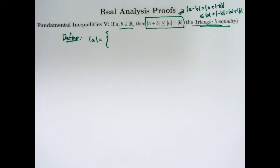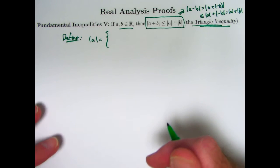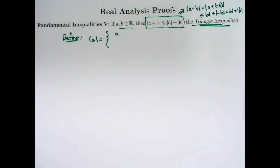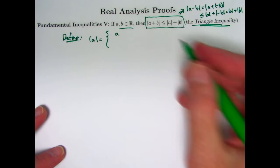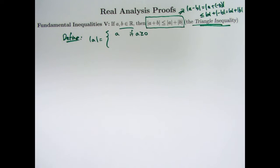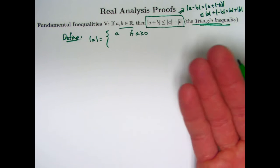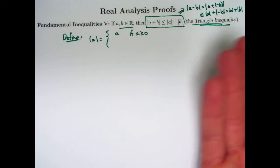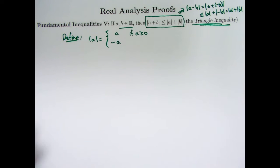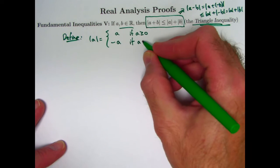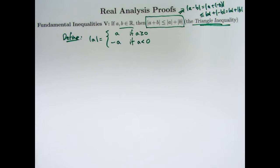You can write it as a piecewise formula. If a happens to be greater than or equal to zero, then the absolute value of a is a itself. The absolute value of five, for example, is five. This is true even if a equals zero — the absolute value of zero is zero. On the other hand, if a is a negative number like negative five, the absolute value of negative five is the distance from negative five to zero, which is positive five — which is the additive inverse, or negative of five. Negative a, the additive inverse of a, is positive when a is negative. So the absolute value of a equals negative a when a is negative.